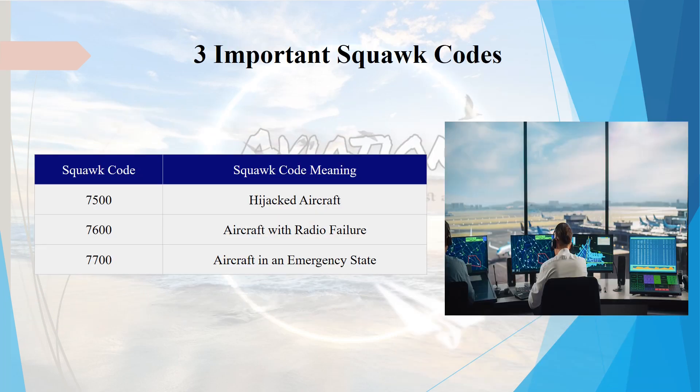There are three important squawk codes used in the aviation industry. Squawking one of these three codes indicates a special situation involving an aircraft. If an aircraft squawks 7500, it indicates to the ATC that the aircraft is under hijack. If an aircraft squawks 7600, it means the aircraft has undergone a radio failure and further instructions need to be given using light signals. If an aircraft squawks 7700, it means the aircraft is in a state of emergency, which can be due to a medical emergency on board, engine failure, bird strike, or depressurization.